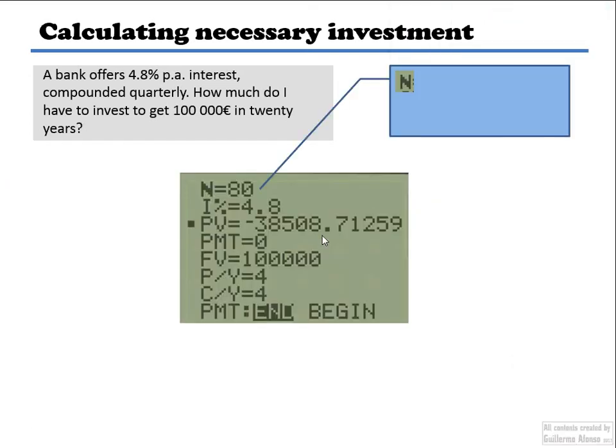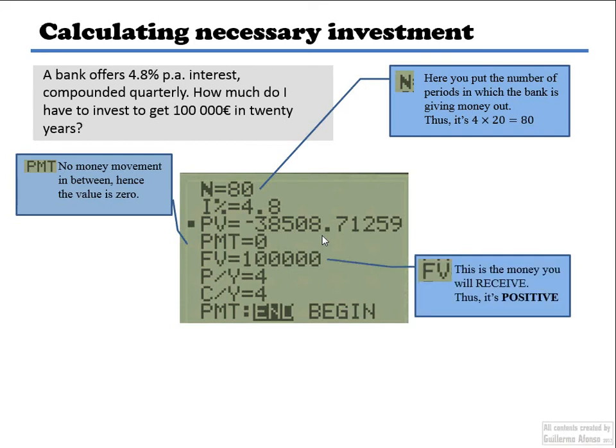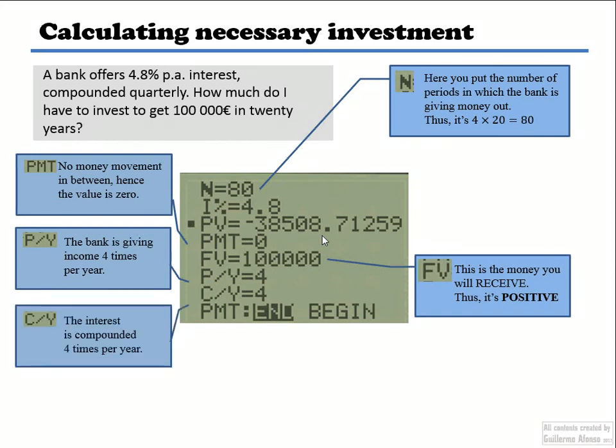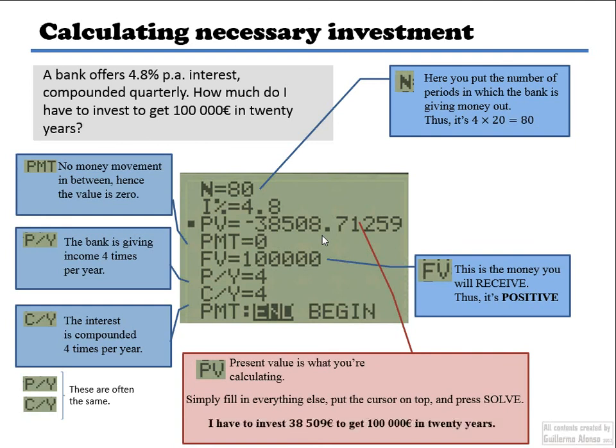So this is what I get. Let's break it down again. 80, which is four times 20. I compounded quarterly, 20 years. I put 80. PMT, there's no money paid in between. Future value is a hundred thousand. Payment per year is four. And you know, again, as I said, payment per year, compounded periods per year, they're always pretty much going to be the same. And just press alpha solve on present value, put the cursor there, and I get the solution.